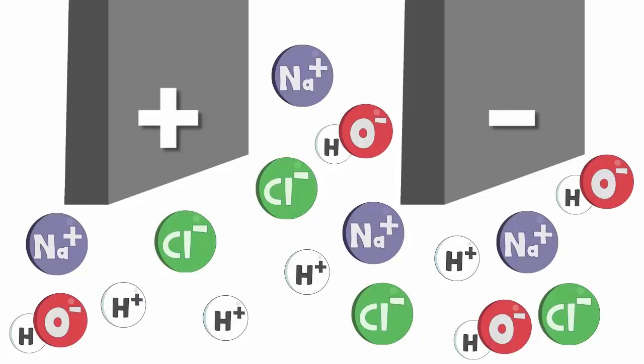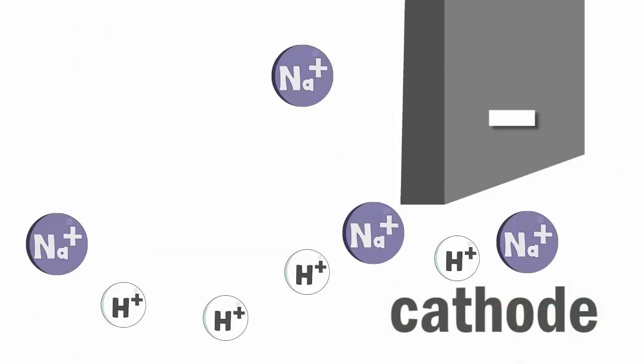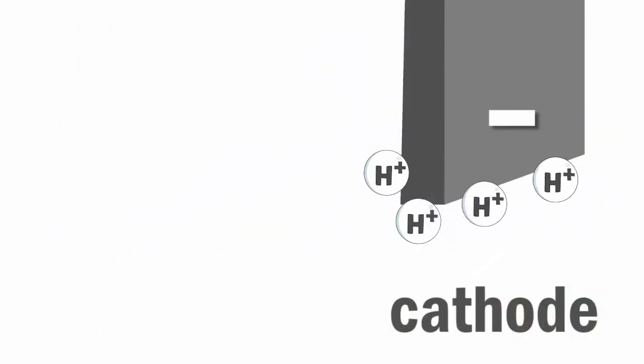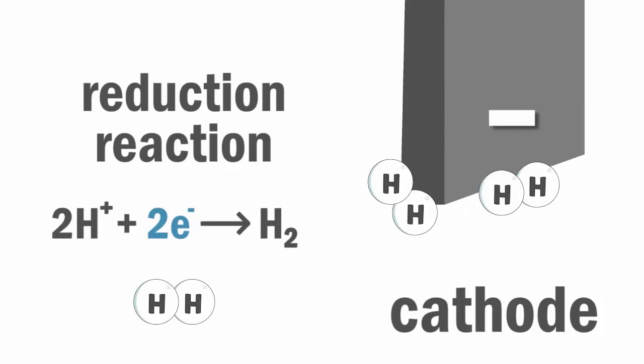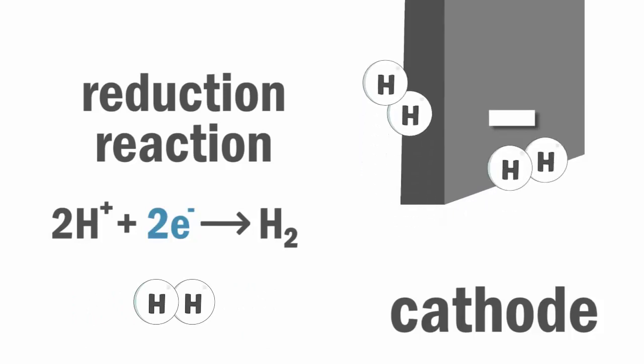Well what about the cathode? It is negatively charged and attracts the positive sodium and the hydrogen ions. The hydrogen ions each gain an electron from the electrode to form hydrogen atoms. Here's the equation. Two hydrogen atoms then bond to form a diatomic hydrogen molecule. And that's the hydrogen gas given off.